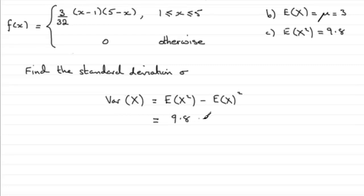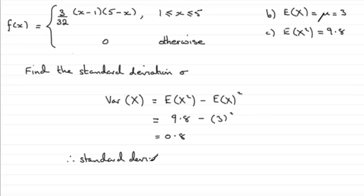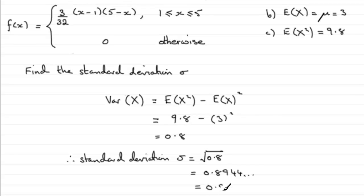Substituting these values in: 9.8 minus 3 squared gives us 9.8 minus 9, which is 0.8. The standard deviation is the square root of the variance, so the standard deviation sigma equals the square root of 0.8, which on your calculator gives 0.8944, rounded to three significant figures.